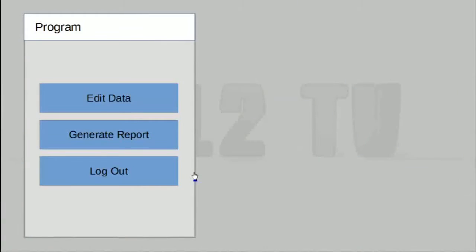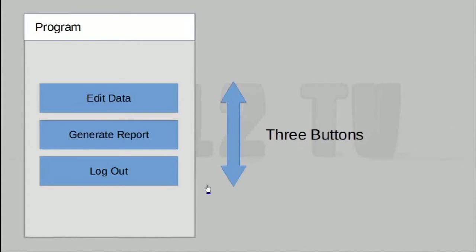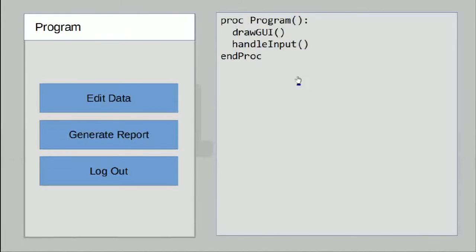To explore this idea, let's take a look at a very simple program. Our program looks something like this and basically there are three big buttons. All we have to do is write some code that allows our buttons to work correctly. At the simplest level of abstraction, we just need to draw the entire GUI once and then prepare to handle the inputs.